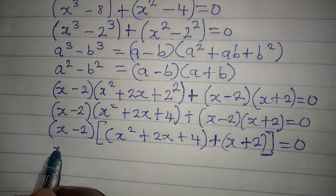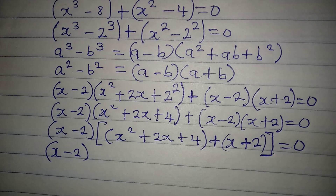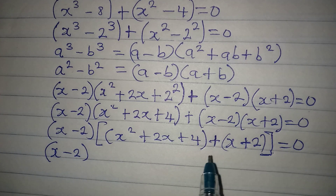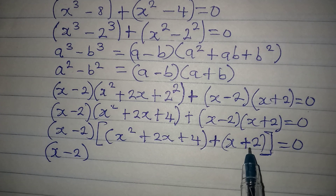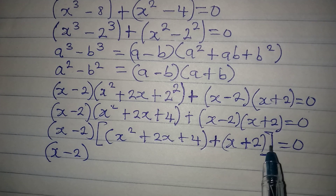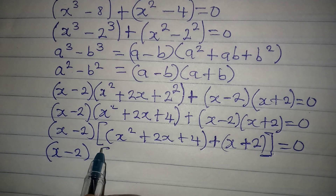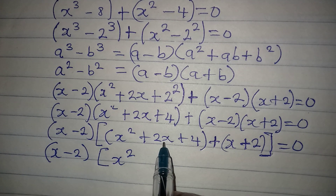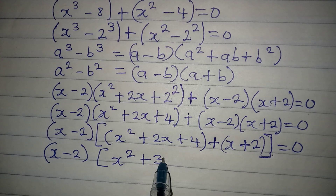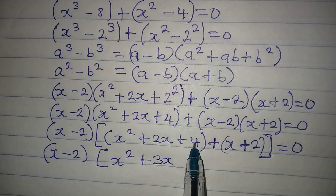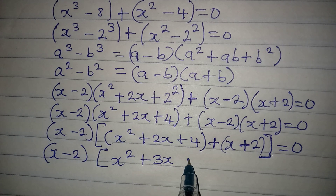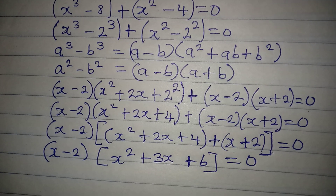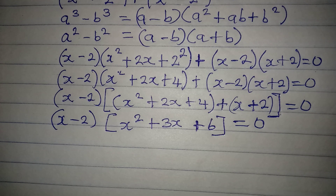Since x minus 2 is out as a common factor, I open the inner bracket by adding — we are not multiplying the brackets, just adding. So the second bracket becomes: x squared, then 2x plus x gives 3x, then 4 plus 2 gives 6. So we now have (x minus 2)(x squared plus 3x plus 6) equal to zero. Apply the zero product rule.